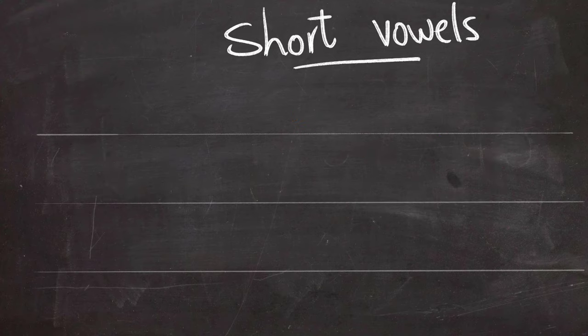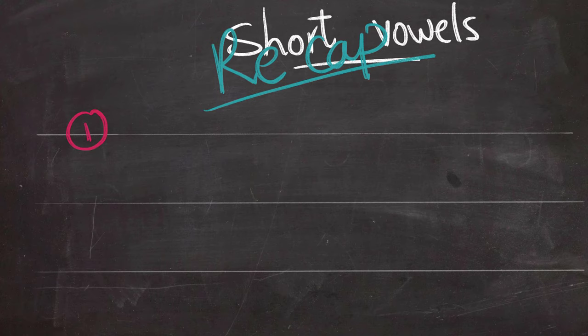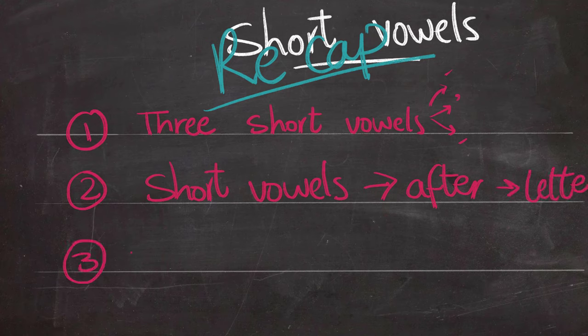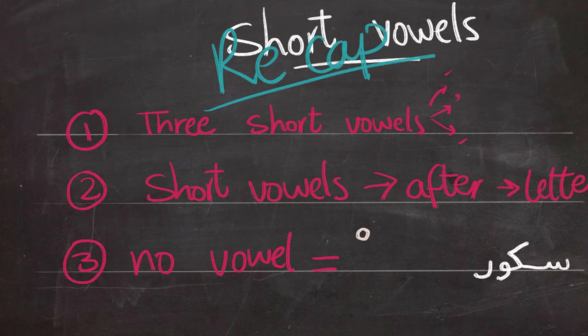So to recap what we've done so far. First there are three short vowels in the Arabic language. They are fatha, domm, kasra. Short vowels are pronounced after the letter not before. And when there is no vowel that means you're going to use this round symbol which means sukoon.